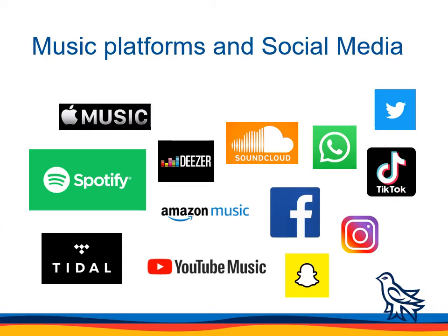In this slide we can see the music platforms and social media we have nowadays. On the right we have Facebook, Snapchat, Instagram, WhatsApp, Twitter, and TikTok. On those platforms, people tend to express their feelings and mood through comments, emojis, reactions, and so on. On the left we have music platforms used often — Spotify, Apple Music, Tidal, YouTube Music, Amazon Music, SoundCloud, and Deezer. If we somehow connect the music platforms with social media, we can change the mood of a person — if they have a bad mood, we can convert it toward a better mood.